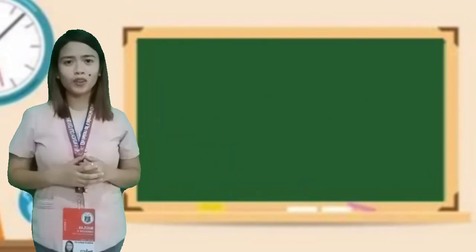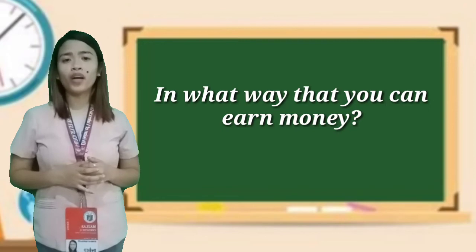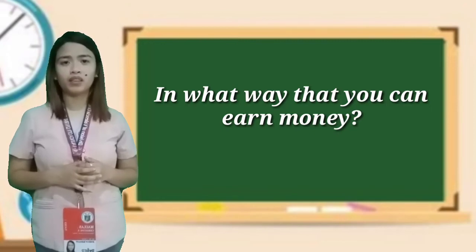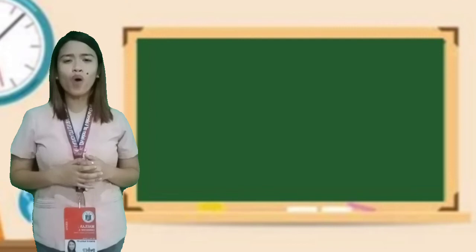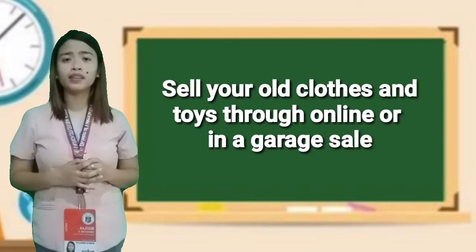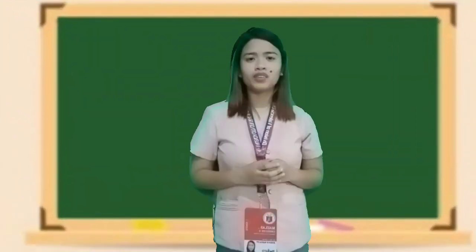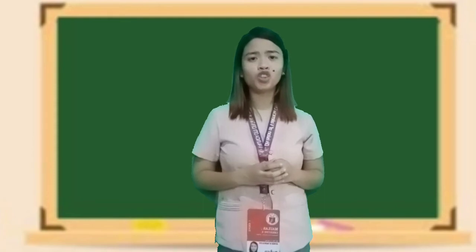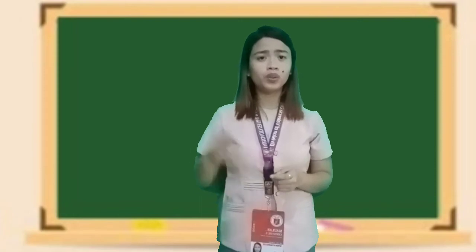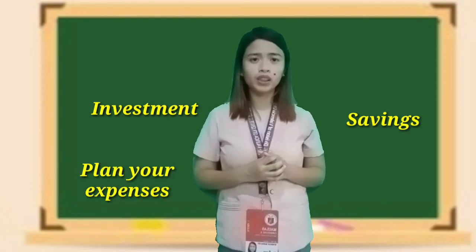Now that you know how to solve commission, here's another question: in what way can you earn money? One example is to sell your old clothes and toys through online or at a garage sale. Another question: how will you manage your money for the future? Exactly — through investment, savings, and planning your expenses.